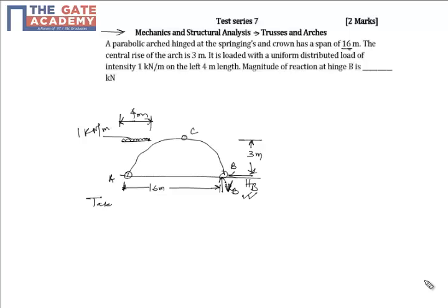So taking moment about A to be 0, we get RB into 16 minus 1 times 4 times 2, which would be equal to 0. This gives RB is equal to 0.5 kN.